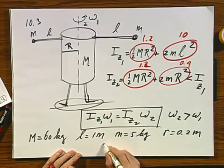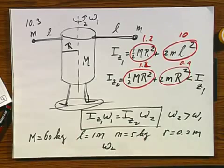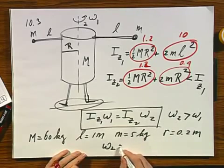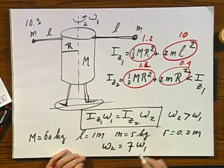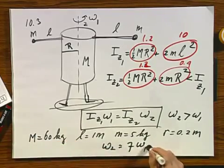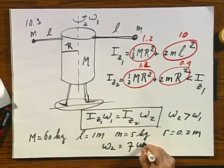And so omega 2, which is the omega after the person pulls her arms in, is about 7 times omega 1. So she rotates about 7 times faster, which is by no means trivial.